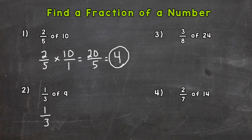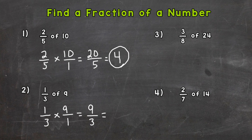For number 2, we have 1 third of 9. Change the 'of' to multiplication and put 9 over 1, giving us a numerator and a denominator. 1 times 9 is 9, and 3 times 1 is 3, so we get 9 thirds. 9 divided by 3 — how many whole groups of 3 can I pull out of 9? Three, and that hits 9 exactly, so 1 third of 9 is 3.